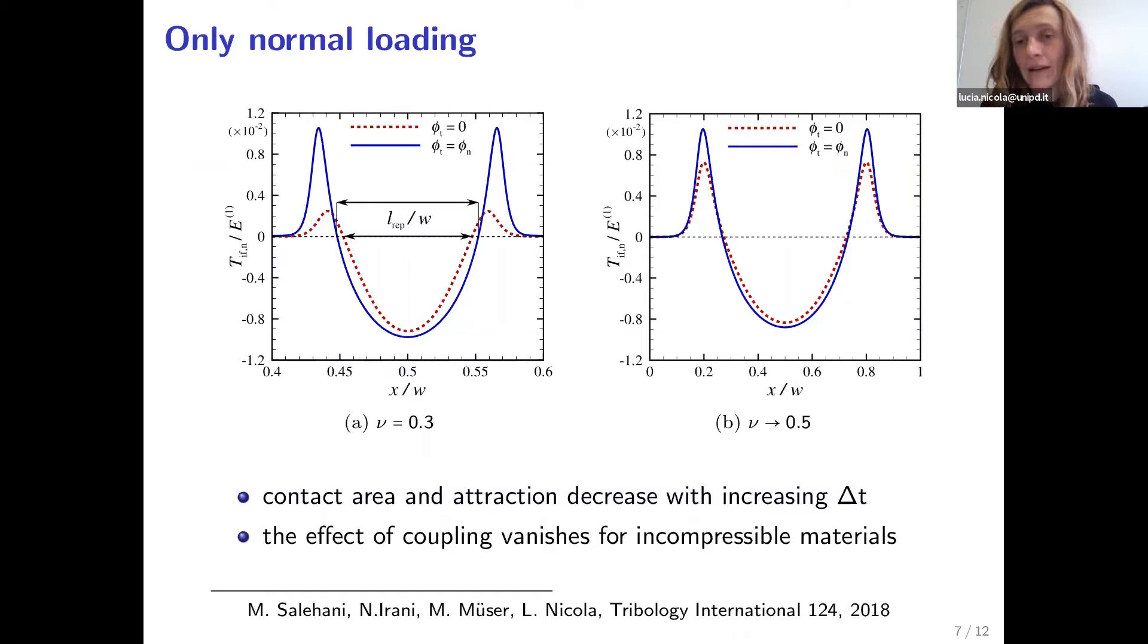There is however effect of coupling if we apply also a tangential loading to our cylinder. And if we do so, the behavior depends on this Maugis-like parameter that we have introduced, which practically tells us how stiff is the interface with respect to the body. So if the Maugis parameter is large, this means that the interface is pretty stiff, then the contact area that we have at the beginning decreases quite fast and reaches a constant value when there is no adhesion anymore. And this constant value stays unchanged up to gross sliding and even after gross sliding.